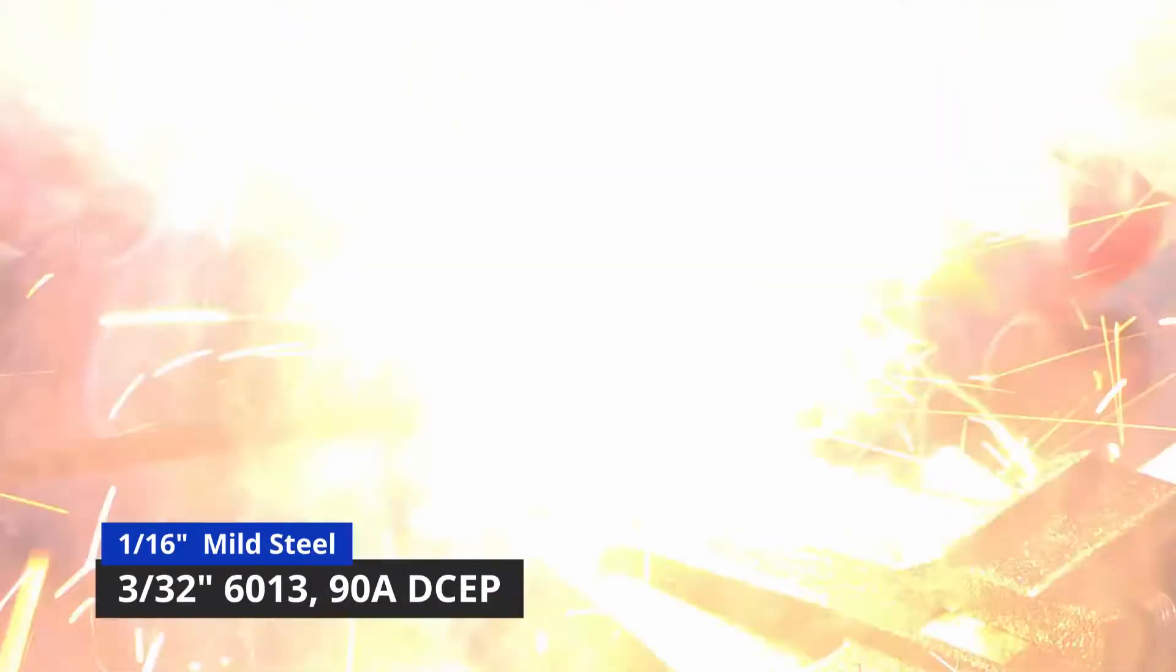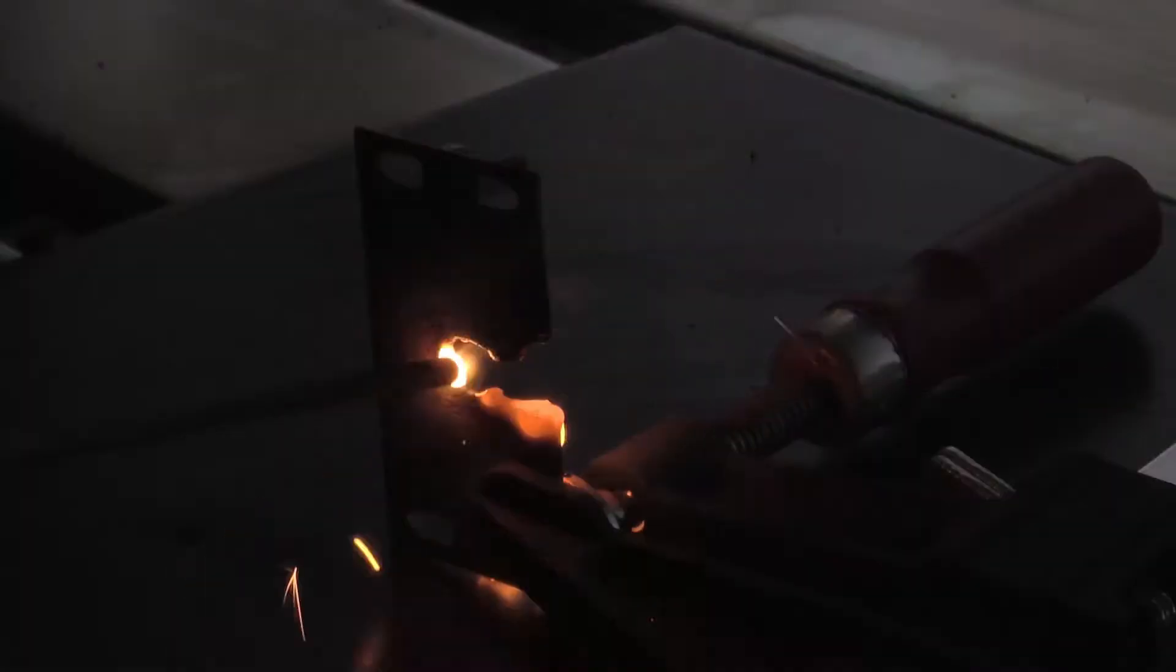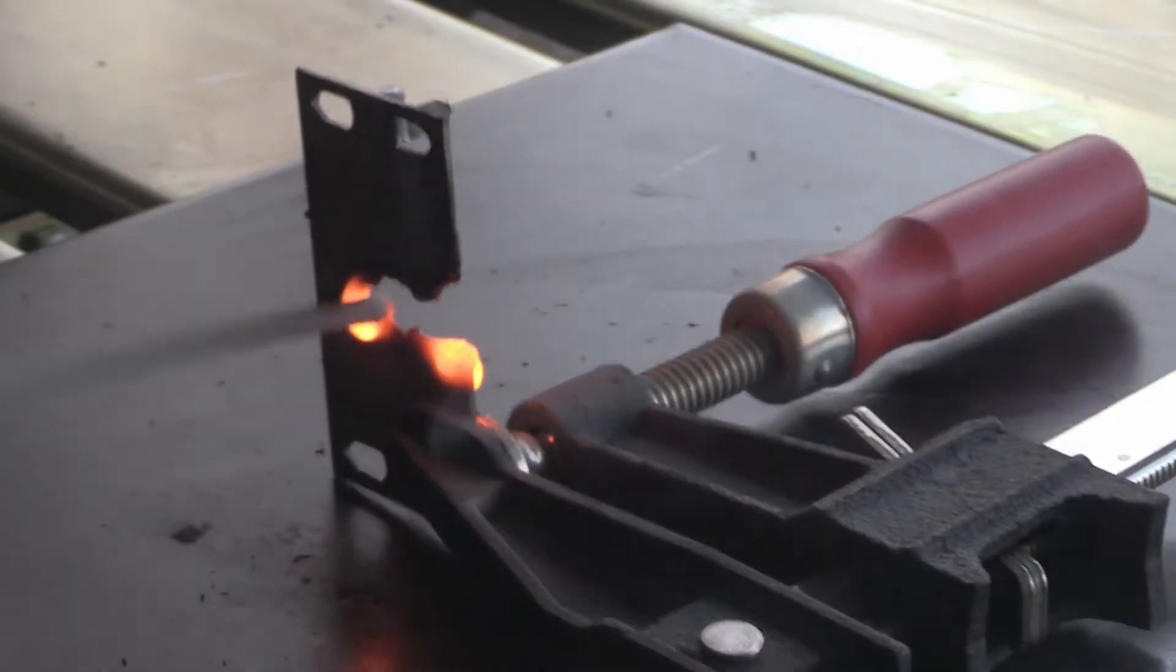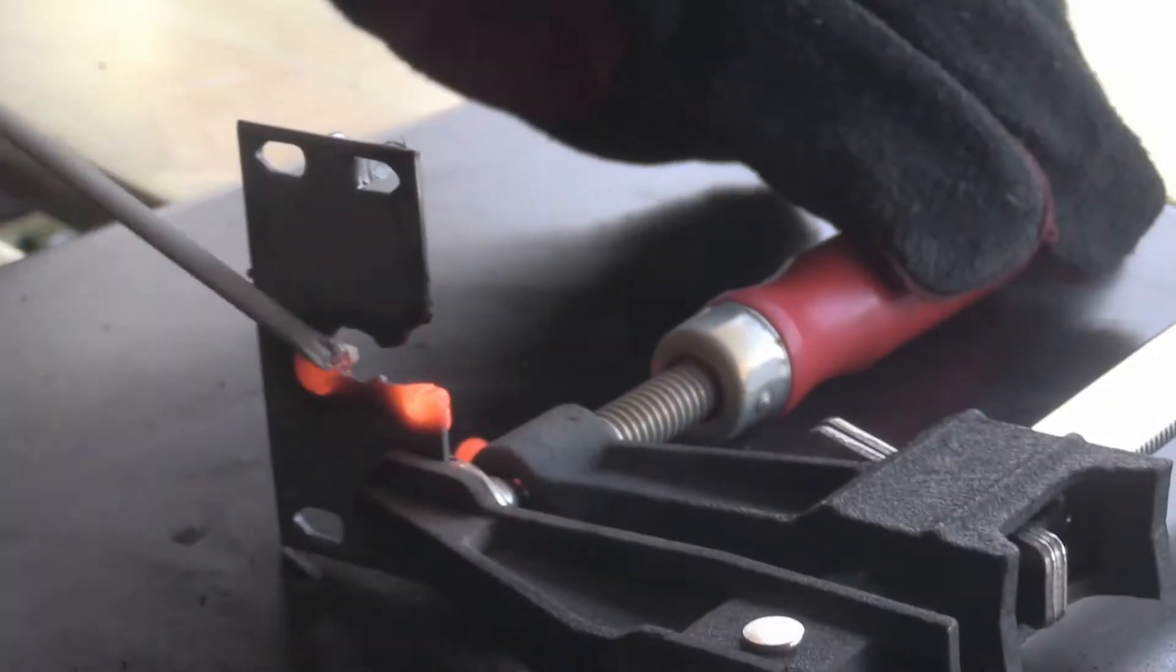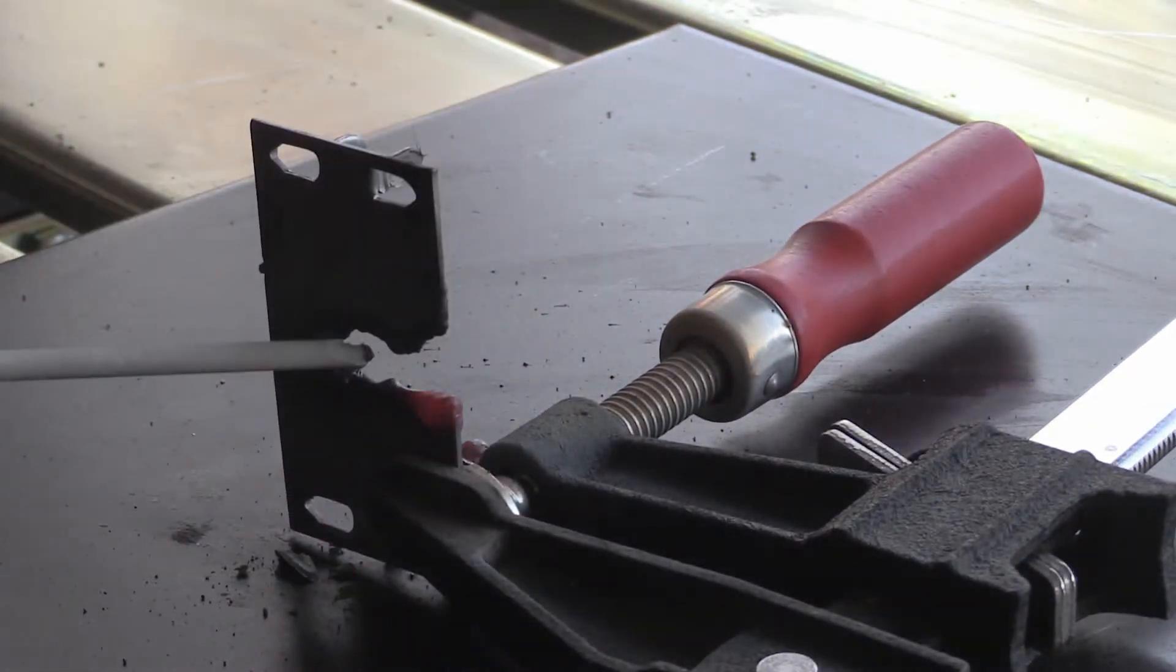Steel of this thickness is normally welded using much thinner rods at less than half the current that I'm using here. So of course the higher current just burns right through. Now, this obviously leaves a very rough cut, and the rod gets stuck sometimes.